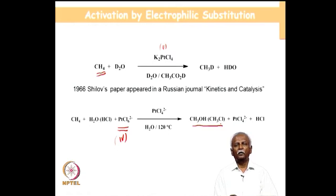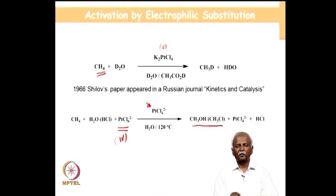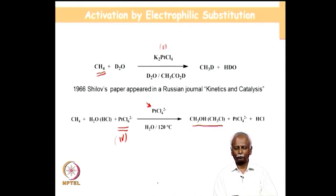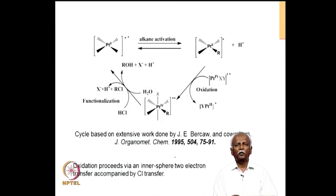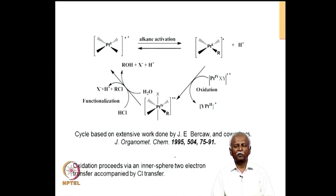A few years later, Shilov published a second more significant paper in which he clearly showed that a platinum(IV) species could be used in a stoichiometric fashion to activate methane to give either methanol or methyl chloride depending on the concentration of chloride ion in the medium. This reaction, published around 1972 about 6 years after the 1966 paper, although not extremely useful because you have to use a stoichiometric amount of platinum(IV), paved the way for understanding electrophilic substitution. The mechanism was solved much later by workers in the west.